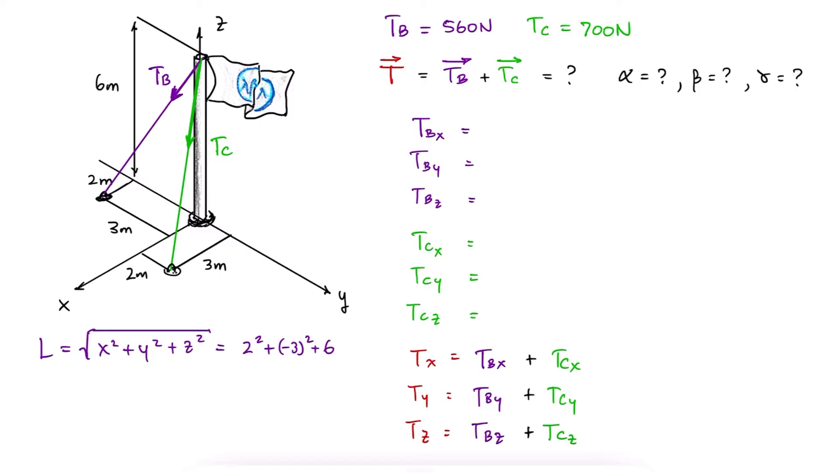The length of the purple cable is therefore 7 meters, as is the length of the green cable.